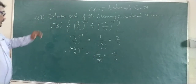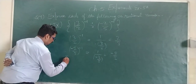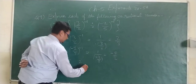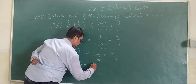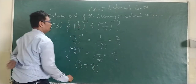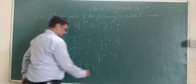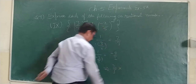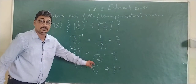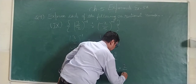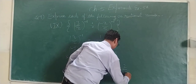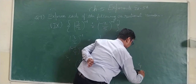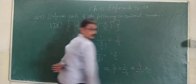So the entire expression becomes 2 upon 3 divided by minus 5 upon 2. It can be written as 2 upon 3 multiplied by 2 upon minus 5, and solving it becomes 4 upon minus 15. This is the answer.